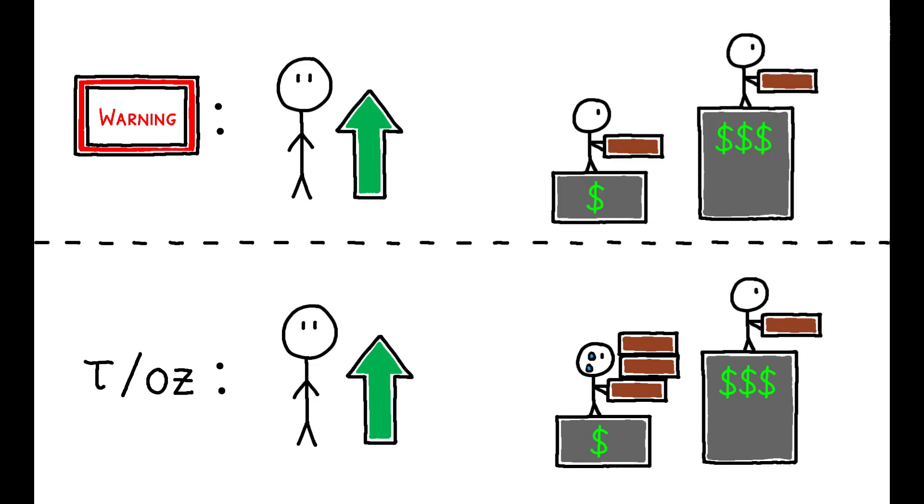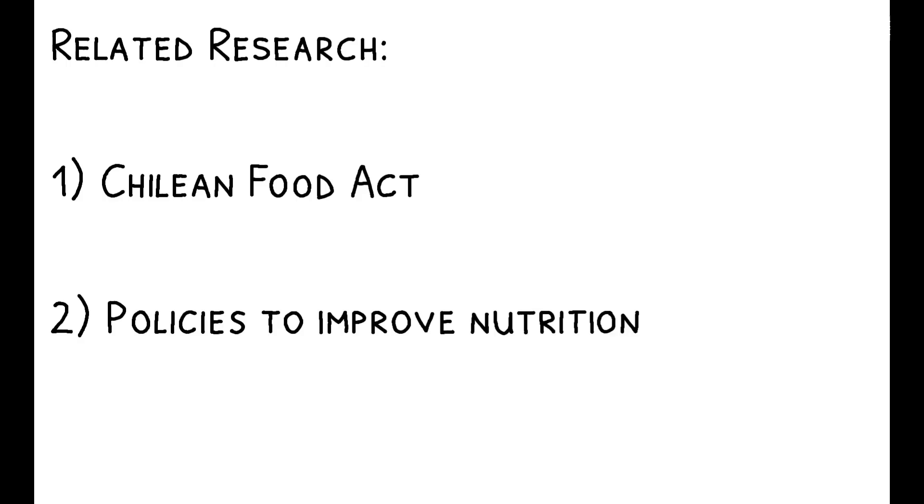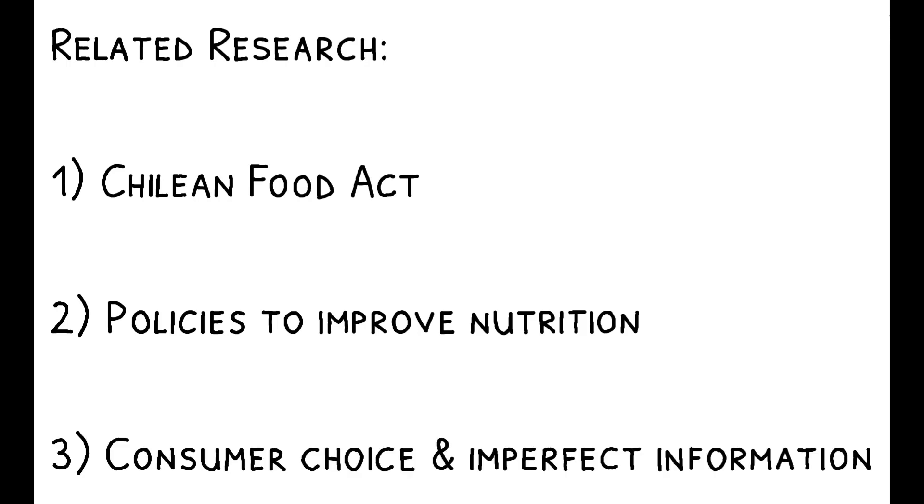As such, labels may be preferable from a distributional point of view. To read more on this topic, you can check out the paper's references to other related work. These include other papers on the Chilean Food Act, those studying policies to improve nutrition, and finally, research on consumers' choices in settings with imperfect information. You can check out the papers at the top screen.